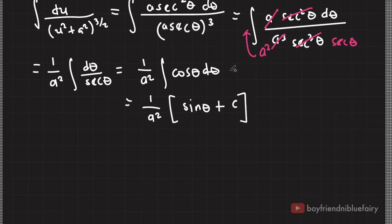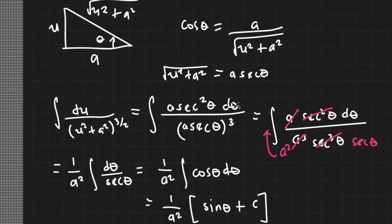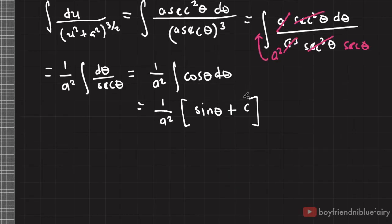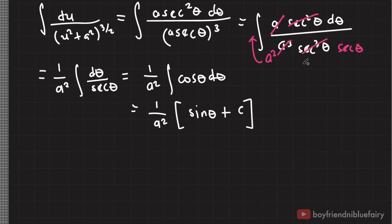Now we have an expression for sine theta and we just need to return from our figure to plug the original integration variable u and constant a. So based on this figure, sine theta is equal to u divided by square root of u squared plus a squared. Now, c here is a constant we can assume equals zero since we don't have any boundary conditions or initial conditions.